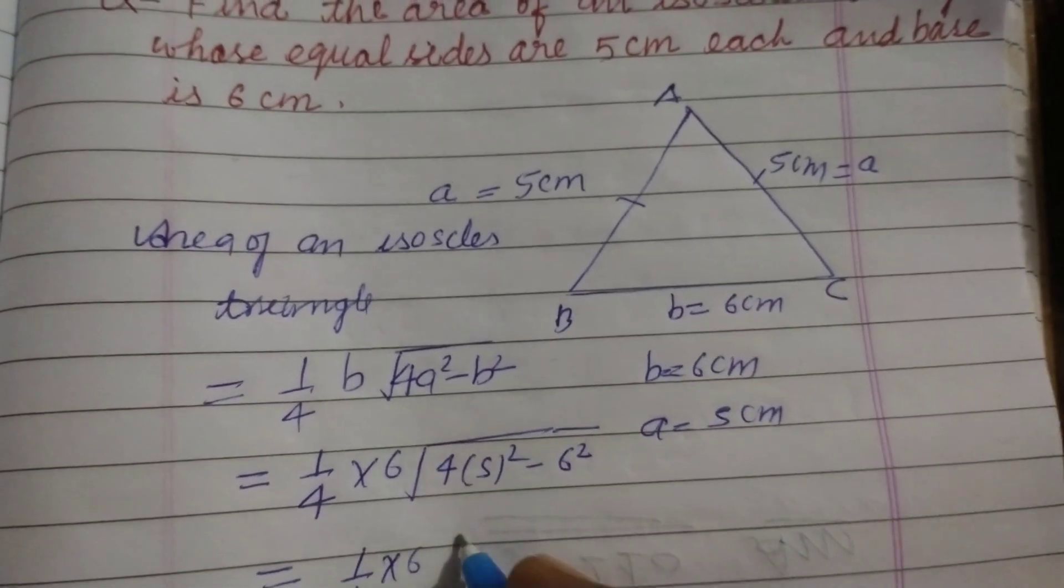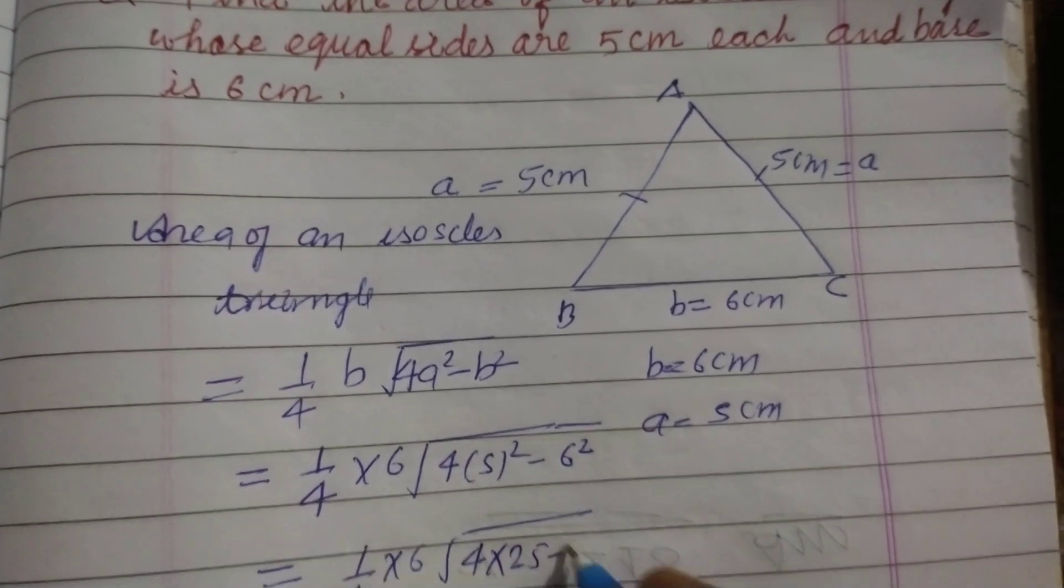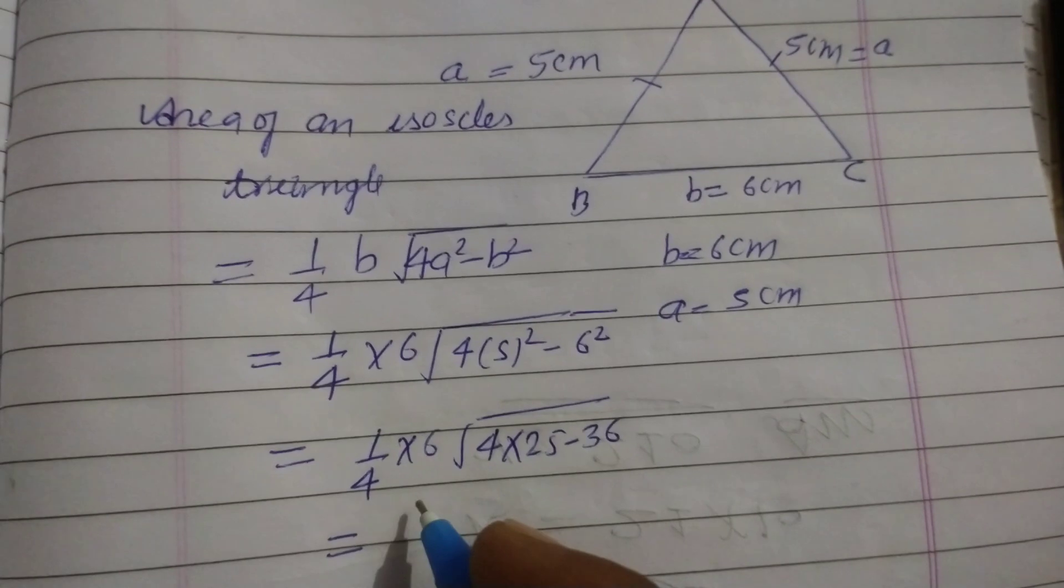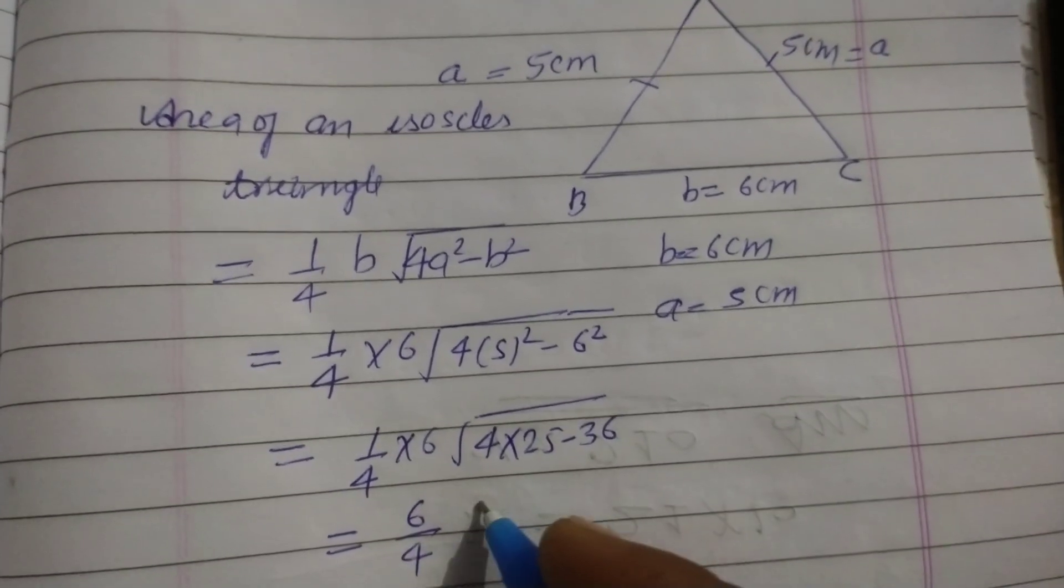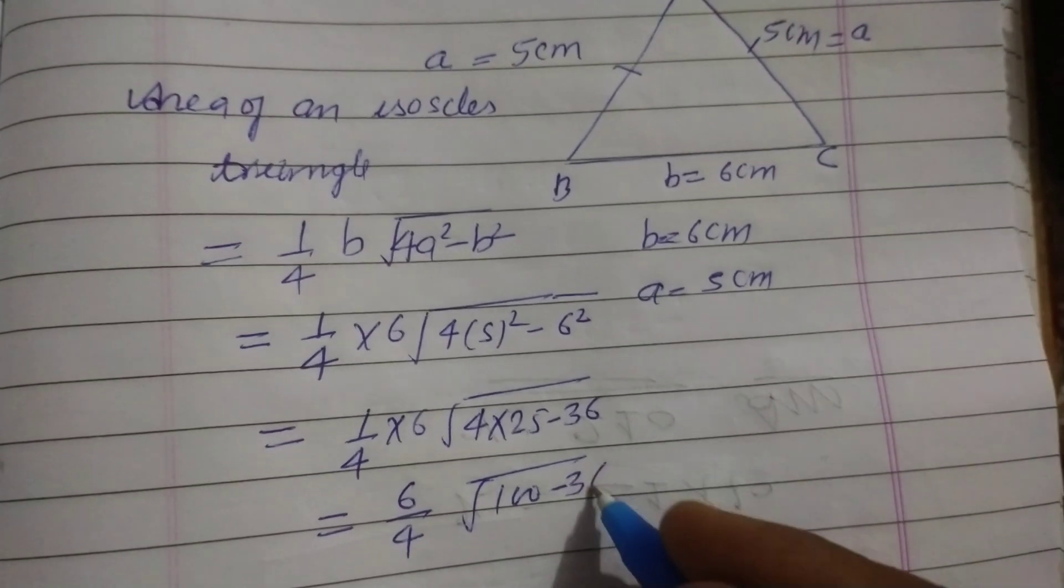1/4 * 6, this is 4 * 25 minus 36. So 6/4, 25 times 4 is 100, 100 minus 36.